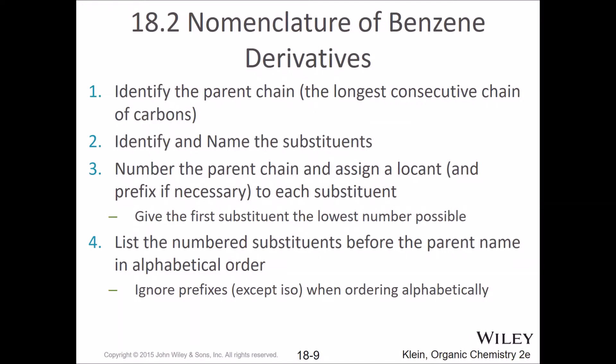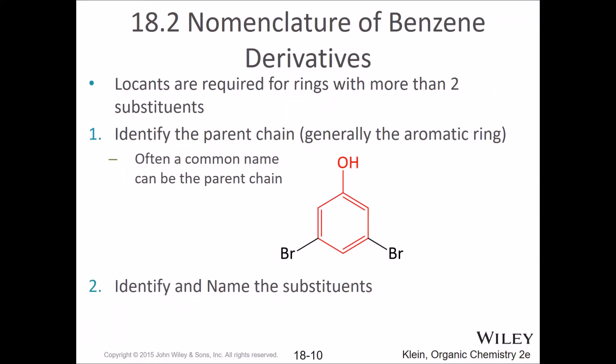The nomenclature of benzene derivatives follows the same rules as always: identify the parent chain, identify and name substituents, number the parent chain and assign numbers, and list the substituents in alphabetical order. Here are a couple of practice examples — identify the parent chain. This is going to be phenol: one, two, three, four, five, six.